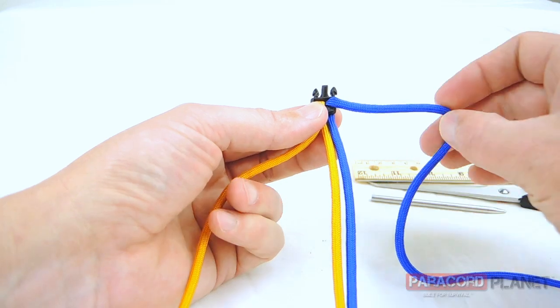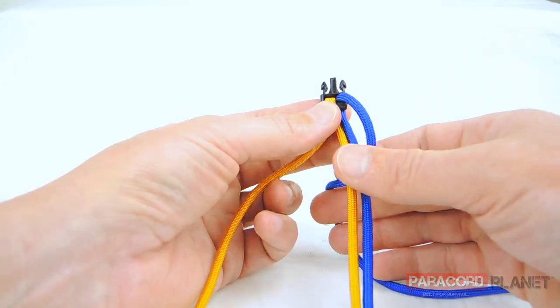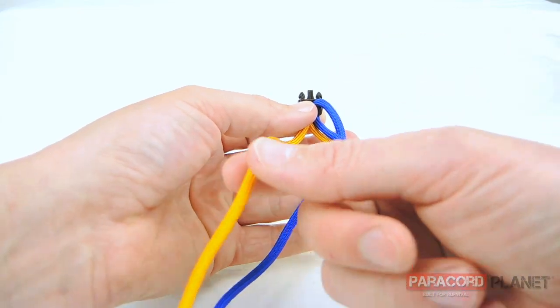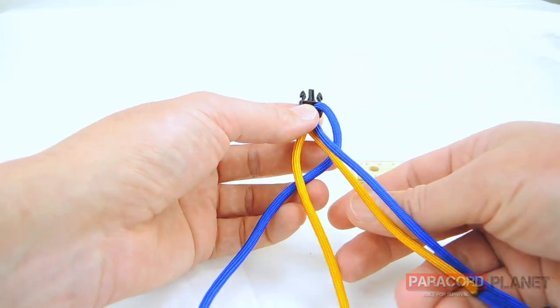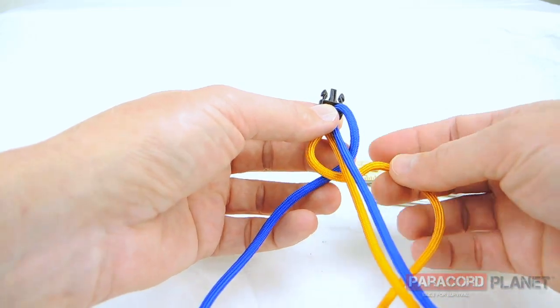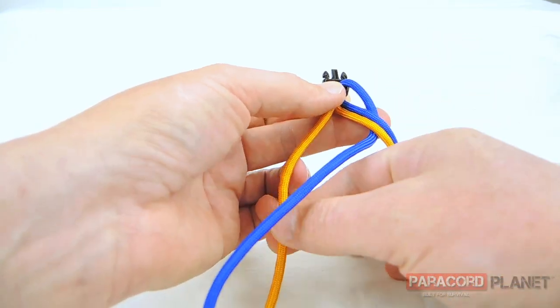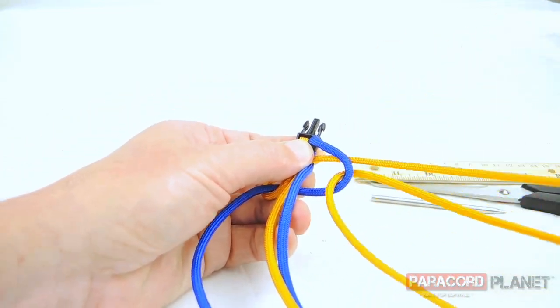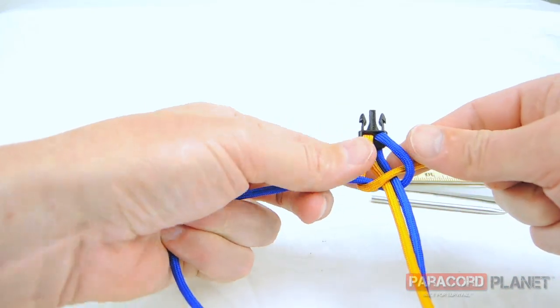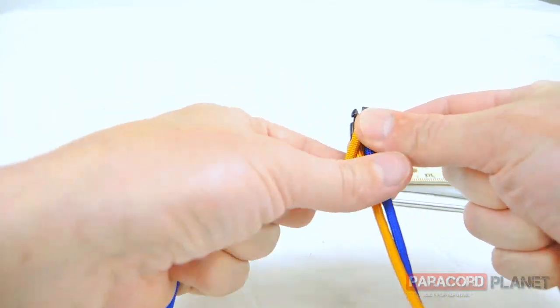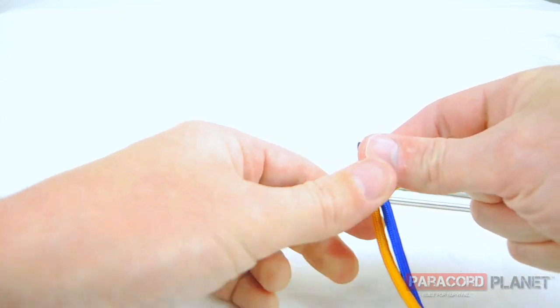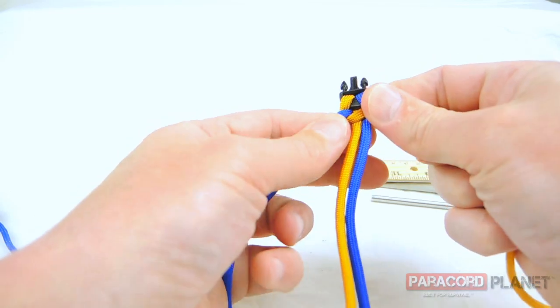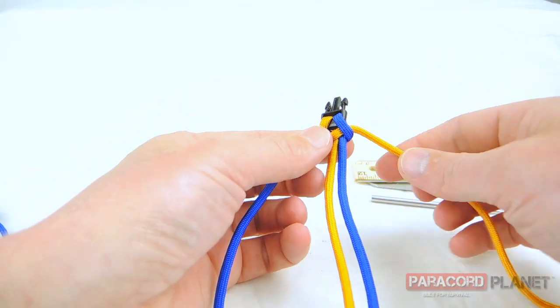So what you do is you take one side, I'm going to do the blue, put it under the other side. I'm going to take the other strand, I'm going to go under, over, and through. Pull it and cinch that tight. It doesn't have to be super tight, but as tight as you'd like it. That's one side of it.